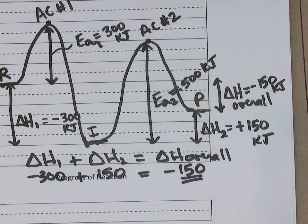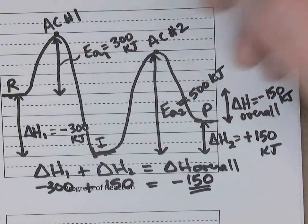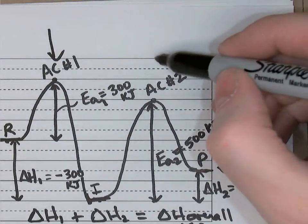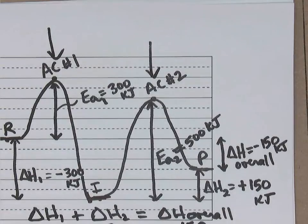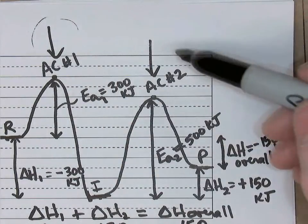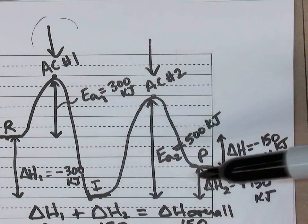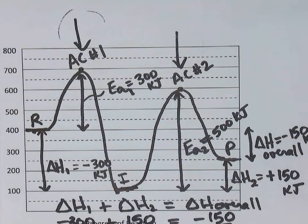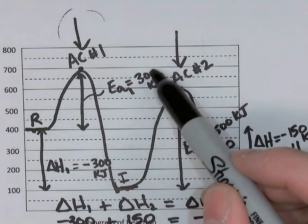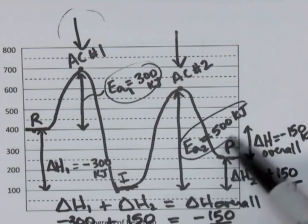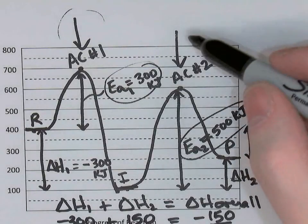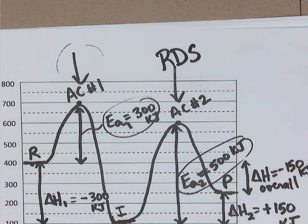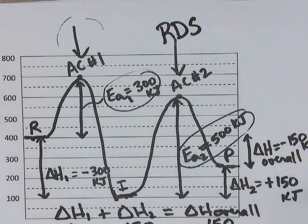Finally, we can answer the interpretation questions. How many steps were in this process? The fact that we see two hills — two activated complexes — implies there were two steps. The first hill is the first step, and the second hill is the second step. Which step was the rate-determining step? The rate-determining step is the slowest step, which has the largest activation energy. Step one's EA was 300 kilojoules and step two's EA was 500 kilojoules, so step two is the rate-determining step. There is a complete, fully labeled potential energy diagram for a two-step process.